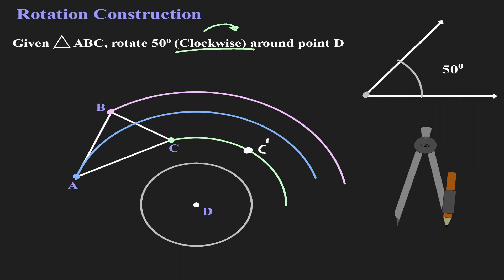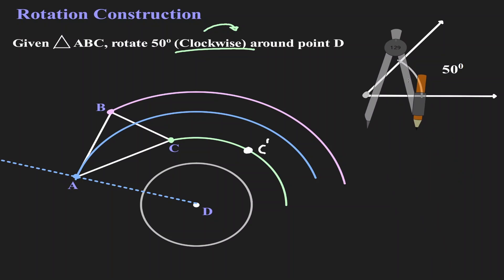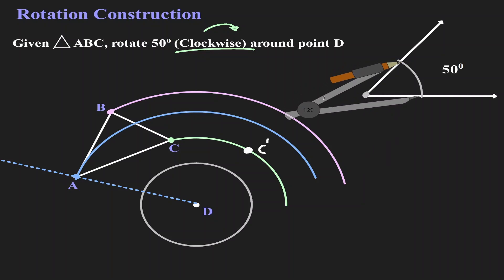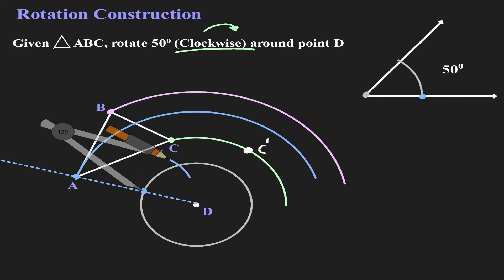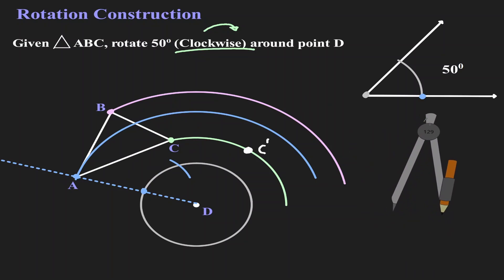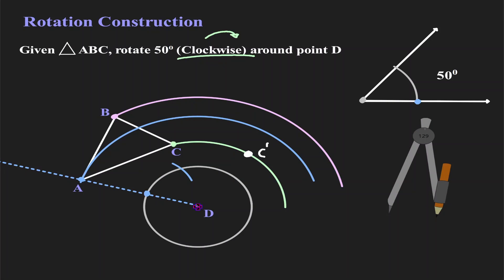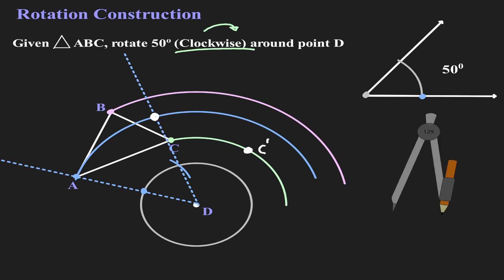Now let's clear these marks and concentrate on point A. Let's start by creating a line that joins the center of rotation D with point A. Now let's use our compass to measure the arc for 50 degrees one more time. Notice that my metal leg is at the lower side of the angle — we're going to place it where the line intersects the circle, without changing the measurement of my compass, and look for that intersection. Now let's create a line that connects point D with the new intersection. Where my new line intersects the arc for point A, this is where we find the image of A — let's call it A'.